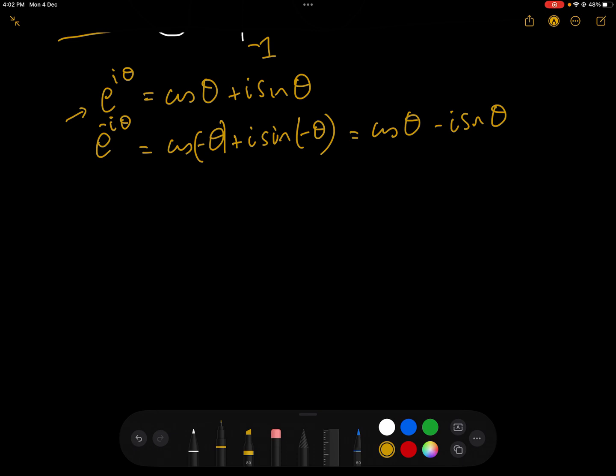And then when we add these two together, we get e^(iθ) + e^(-iθ) = 2cos(θ), i.e. we get in complex world cos(θ) = (e^(iθ) + e^(-iθ))/2.